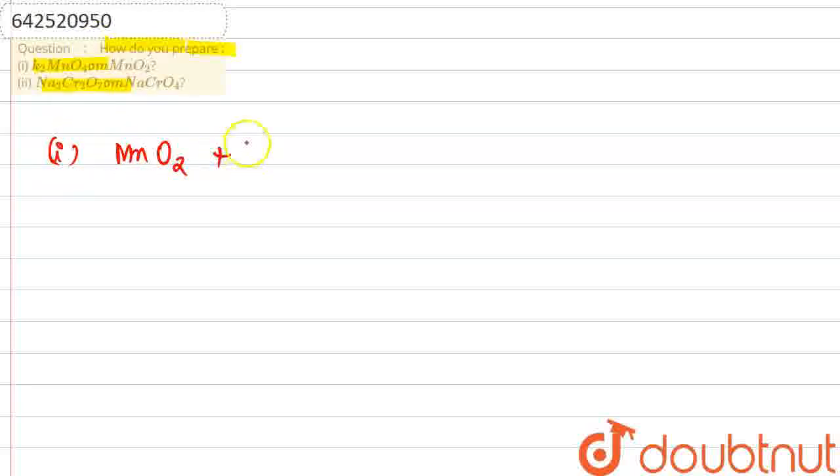Okay, so when MNO2 is treated with potassium hydroxide plus oxygen, slight heat is also given during the reaction, then we would be getting the conversion to K2MNO4 with the elimination of two molecules of water.